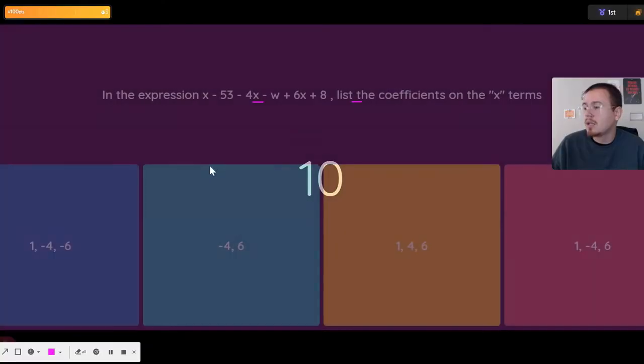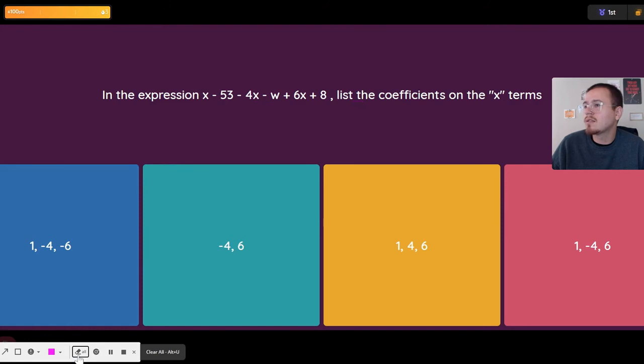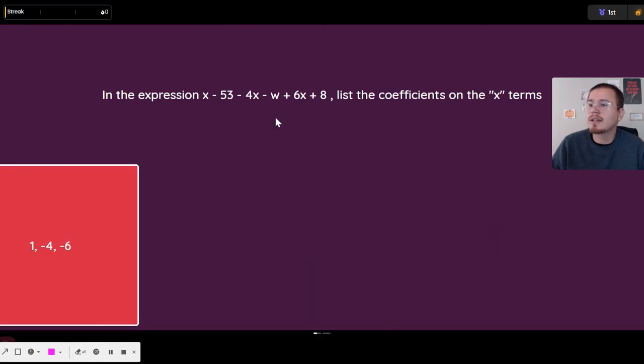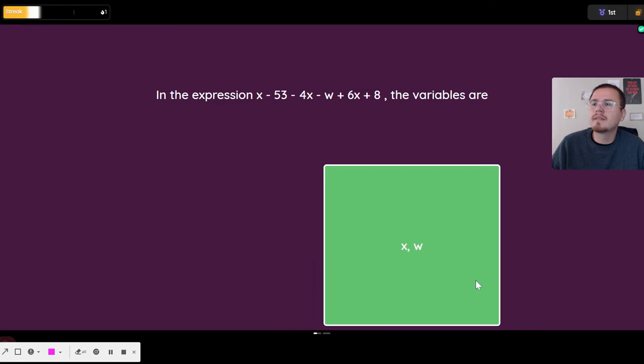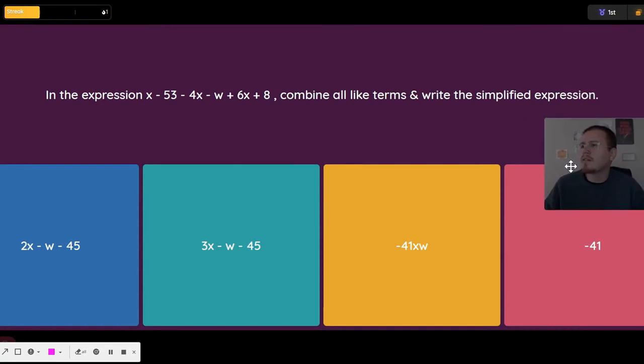List the coefficients on the x terms. Well there's a 1, a negative 4, and a 6. Oops I clicked the wrong one, I'm rushing, I wasn't paying attention. Should have been 1, negative 4, and 6 though. The variables are x and w, that's just the only letters that you see in the problem.